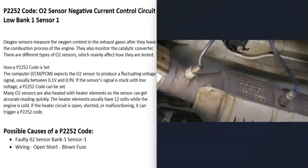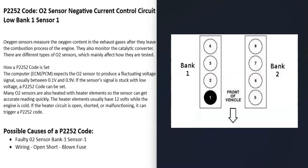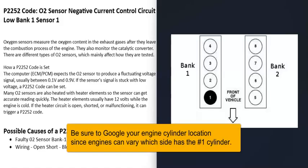When you get this P2252 code, the computer is seeing a problem with one of these sensors — mainly the bank one, sensor one O2 sensor. If you have a V6 or V8 engine, the engine is going to have two banks. Bank one is always the side of the engine with the number one cylinder. You can Google your engine and cylinder location to find which side that is.